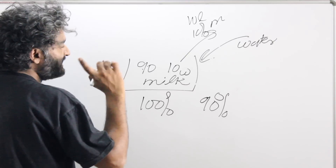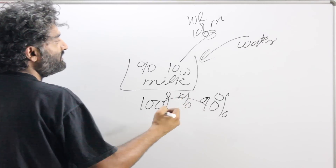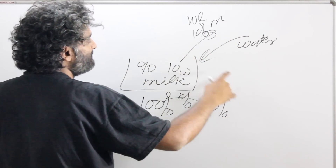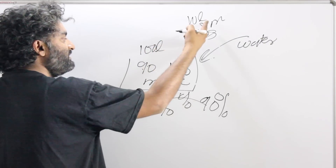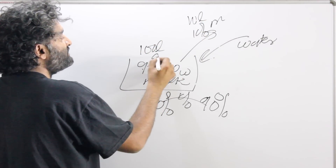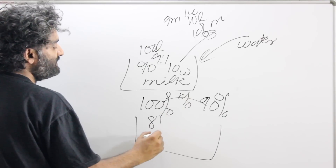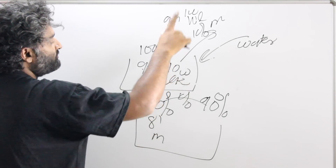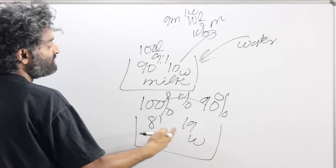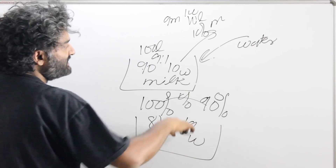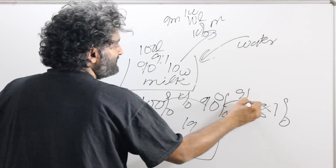When we remove and replace by 10%, the milk percentage reduces by 10%. Doing it again: remove 10% of 100 liters = 10 liters, but now milk and water are in ratio 9:1, so 9 milk and 1 water is removed. You get 81 milk remaining, and with 10 water coming in you get 19 water. So after the second 10% operation, milk percentage becomes 81%.